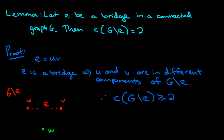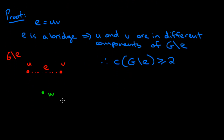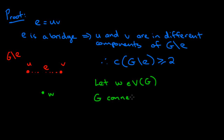We know that the original graph G is connected, and that means that for any vertex W, there will be a path from W to V in the big graph G. Let W be any vertex of G. Since G is connected, there exists a path from W to V in G.